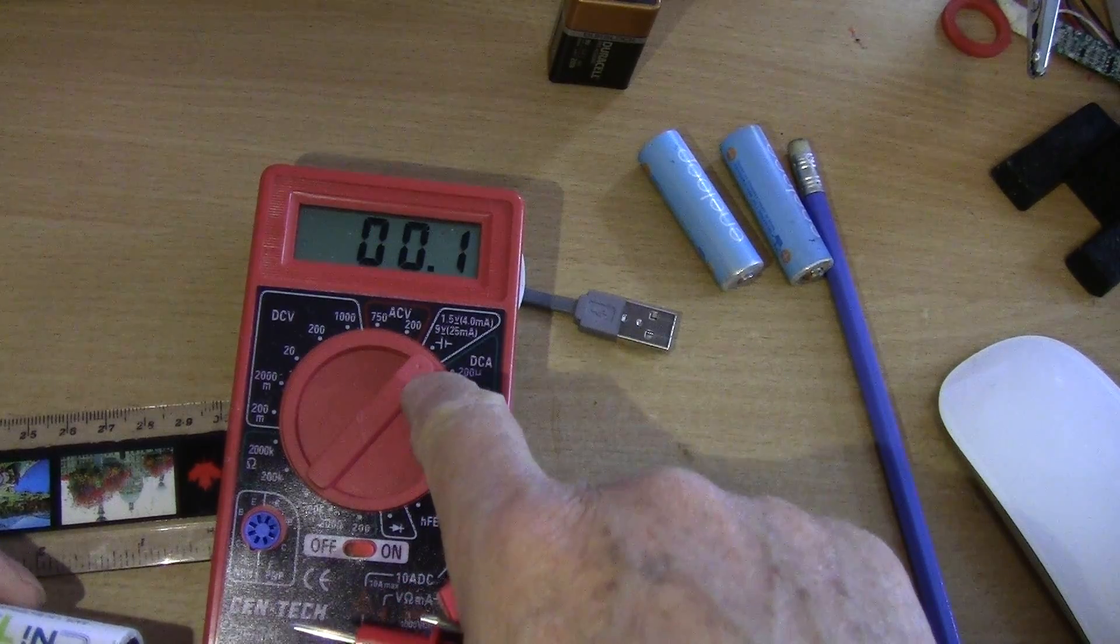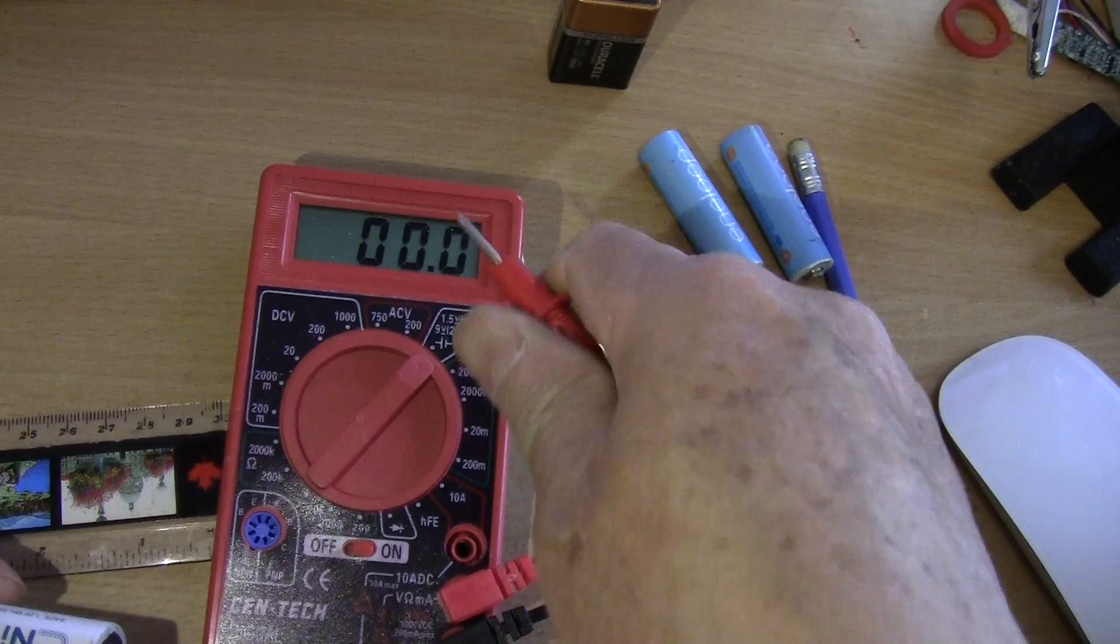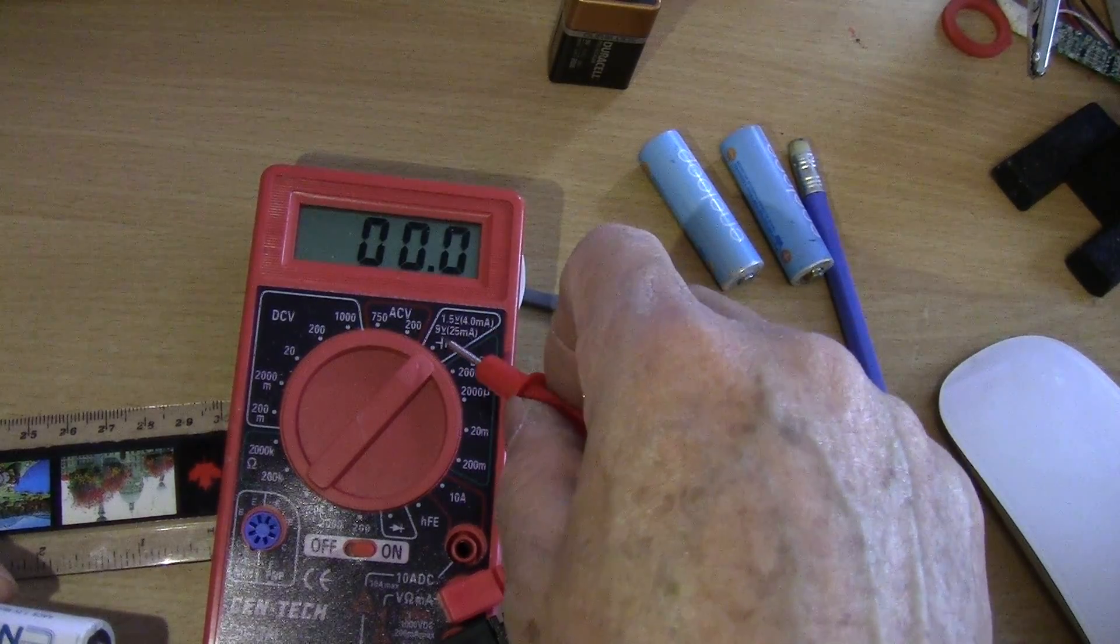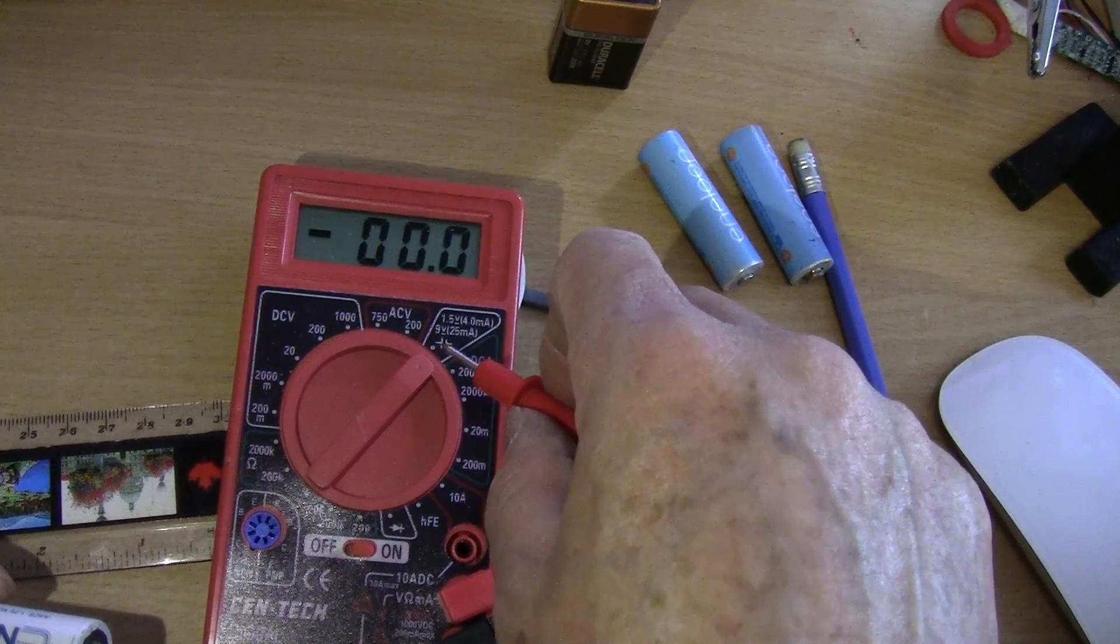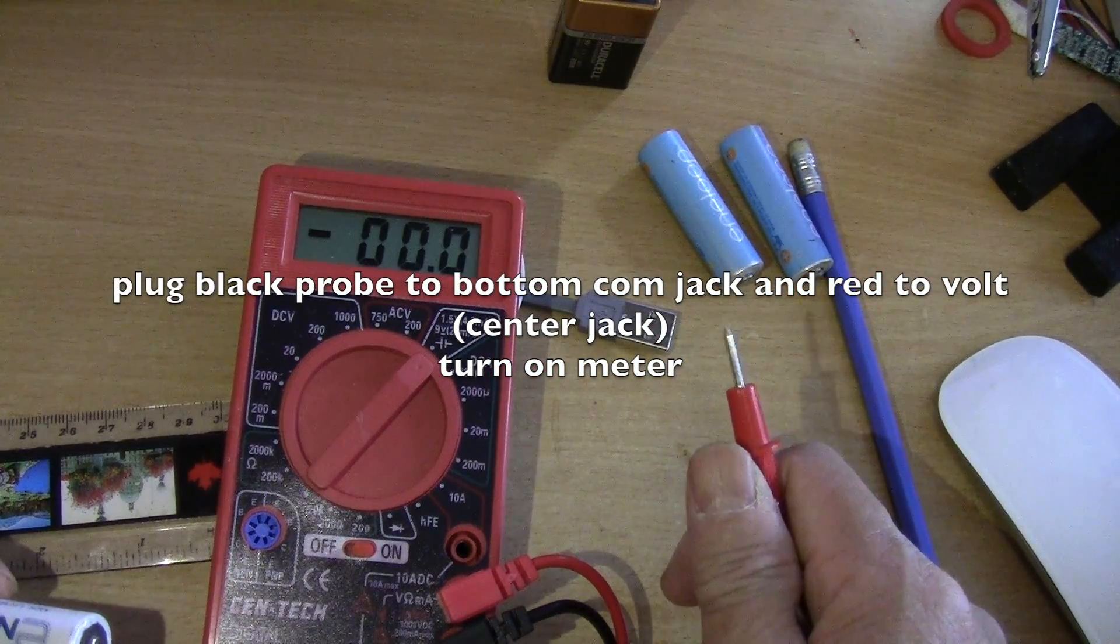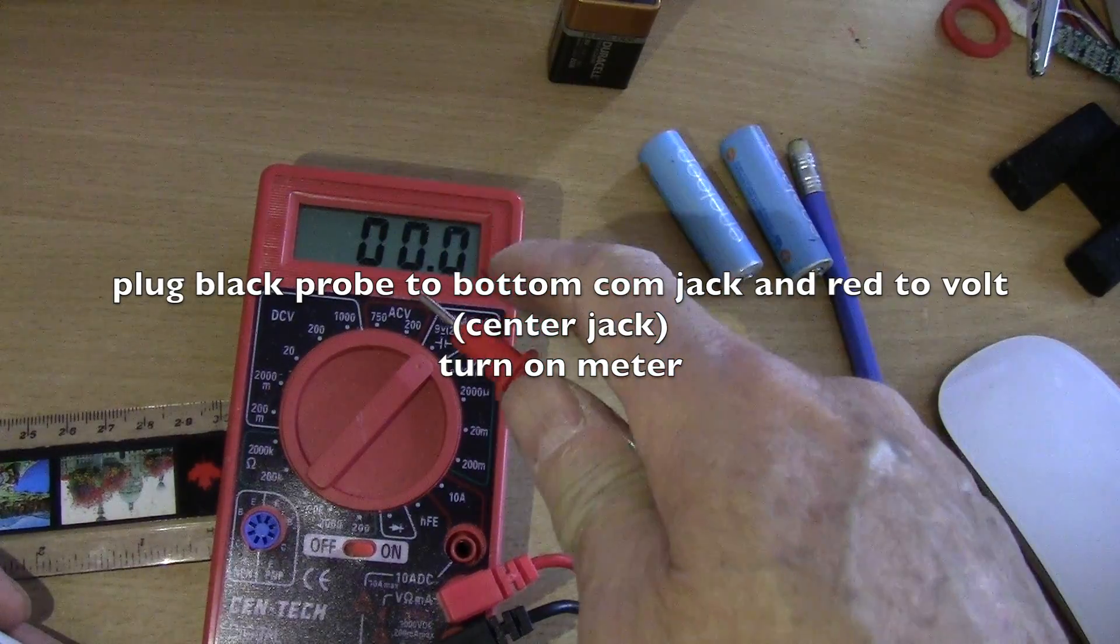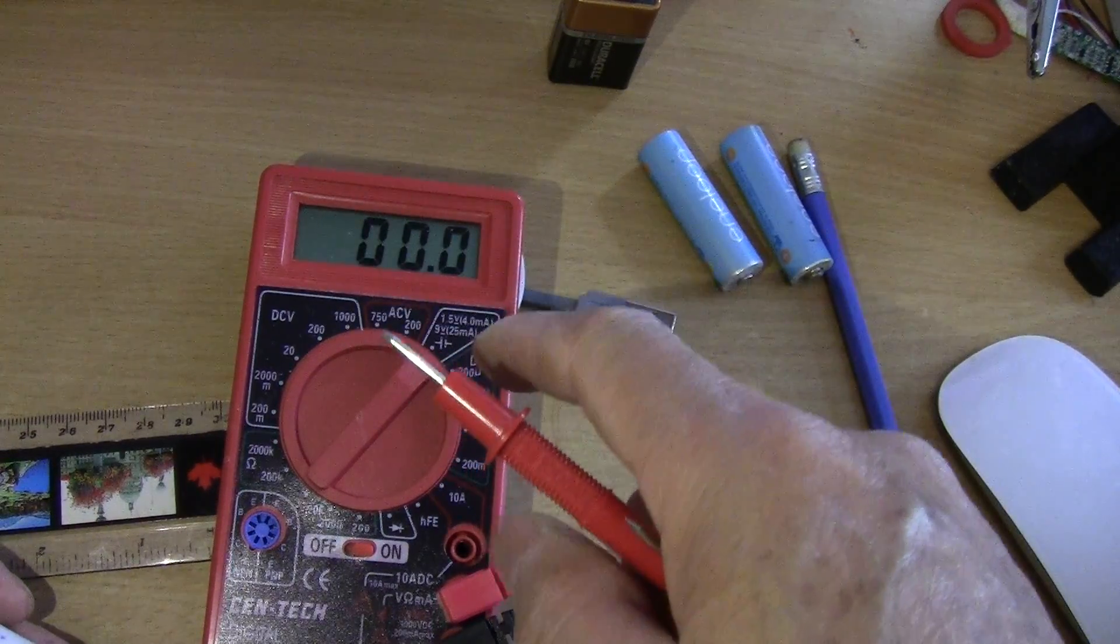What you do is set the meter to this position here where you have the marking for 1.5 and 9 volt. Basically, the meter is going to put a load on the battery.